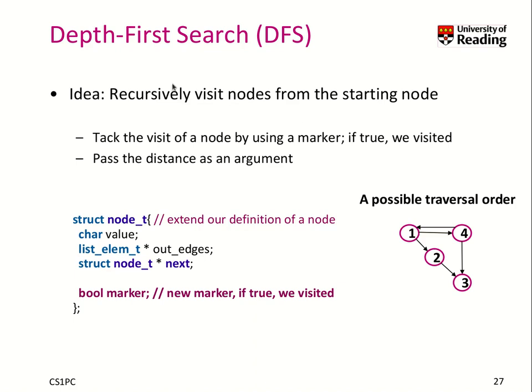Our second traversal algorithm is the depth-first search, or DFS. This one you should really remember and try to understand. It is a little bit simpler than BFS. The idea is that we recursively visit nodes from the starting node.